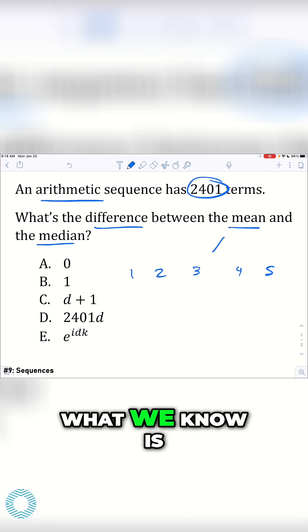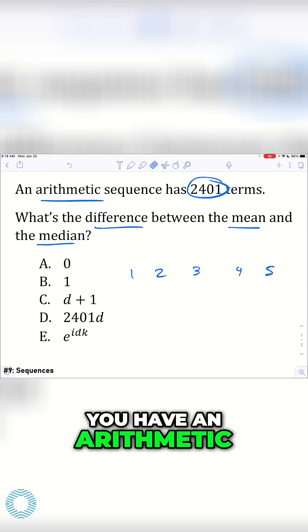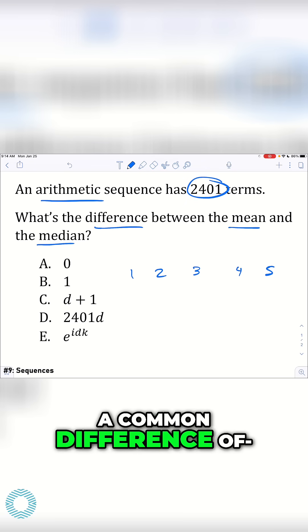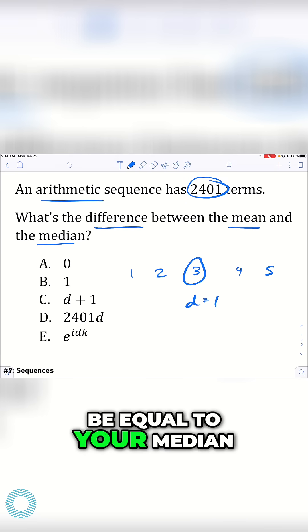Okay, so the mean is what we notice just the middle value. And the median is also just the middle value, which tells you if you have an arithmetic sequence and you have a common difference of, in this case, d equals one, then your mean is actually just going to be equal to your median.